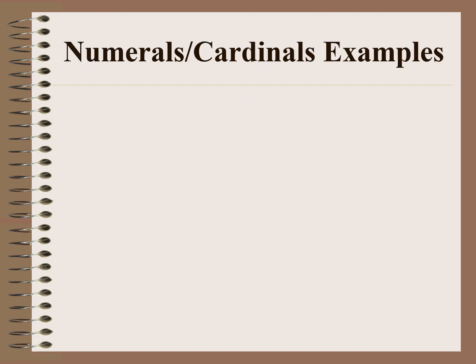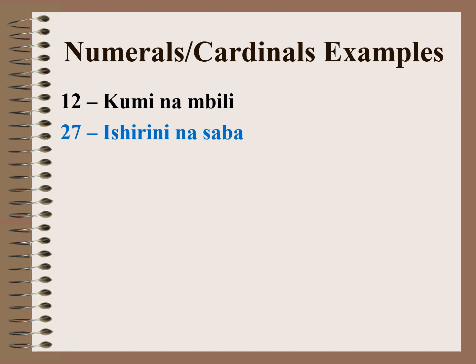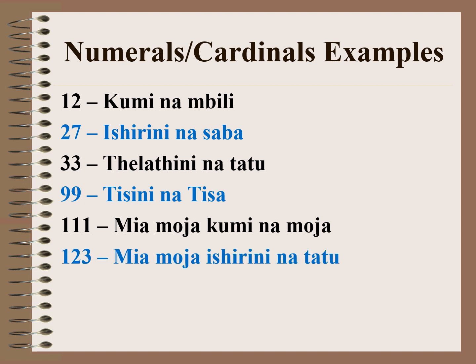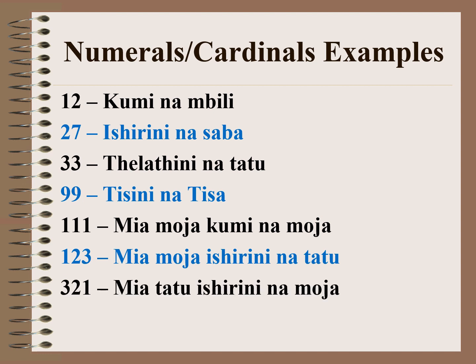On numerals and cardinals examples: 12 is kuminambili, 99 is tisini na tisa, 111 is mia moja kuminamoja, 123 is mia moja ishirini na tatu, 323 is mia tatu ishirini na moja, 657 is mia sita hamsini na saba. So, these are numbers as they are pronounced in Swahili.